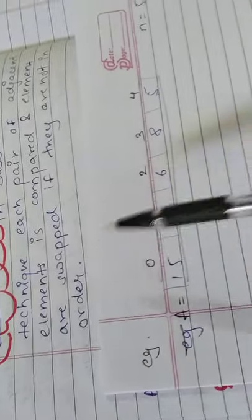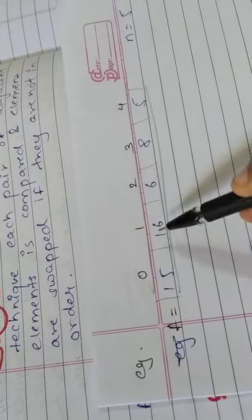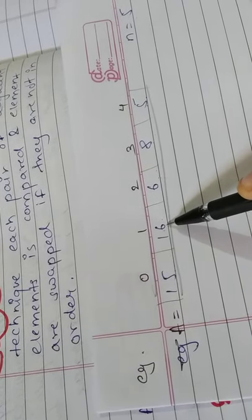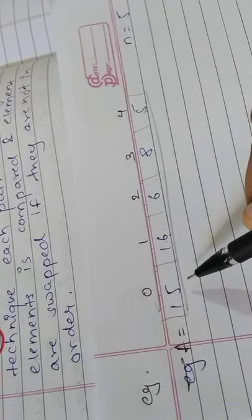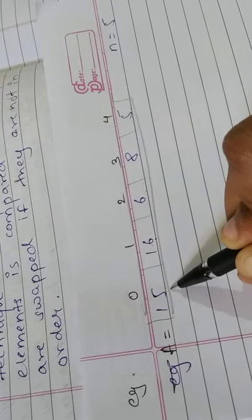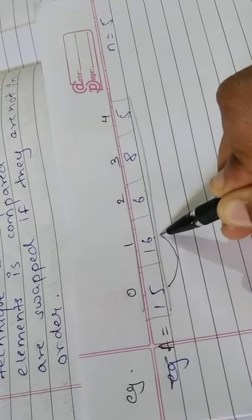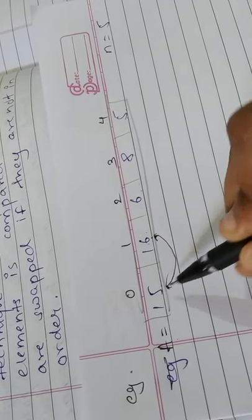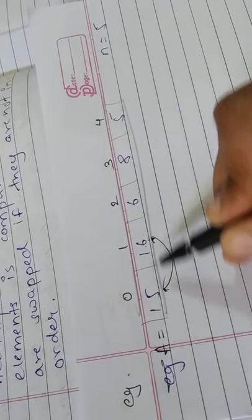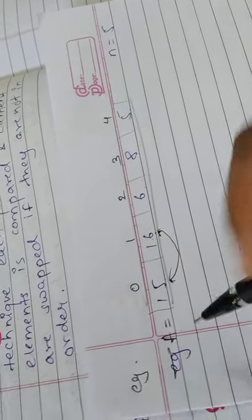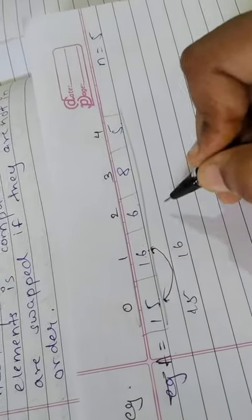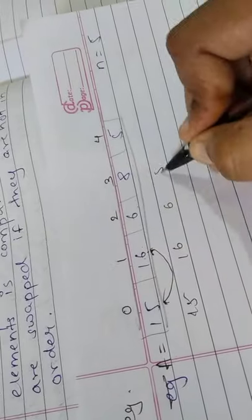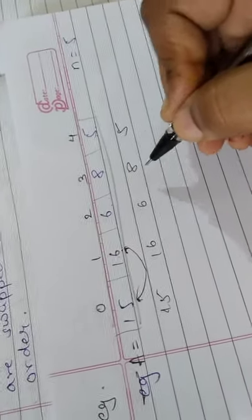According to the definition, adjacent elements are compared with each other. Now let us start with sorting them. 15 is compared with 16 — 15 is smaller than 16, so no swap. The array remains: 15, 16, 6, 8, 5.